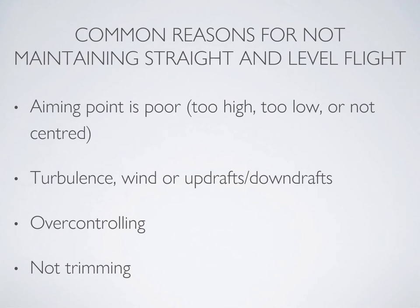Common reasons for not being able to maintain straight and level flight are that your visual aiming point is a bit off - too high, too low, or just not centered in the right spot. That's okay because it takes a little while before you're able to really pick it out. The more you look for it, the easier it's going to be to see it. Turbulence and wind can also have an effect, but not really that much. Another common reason is over-controlling or not trimming.